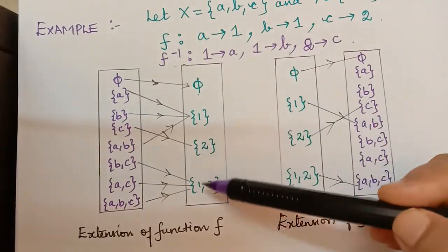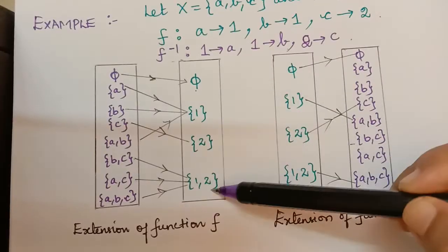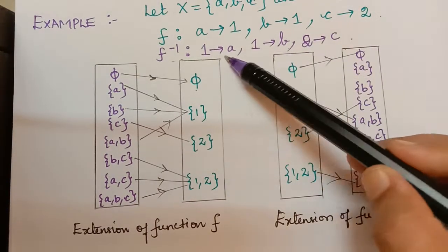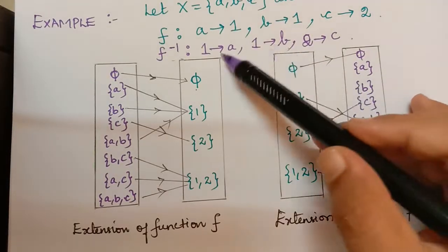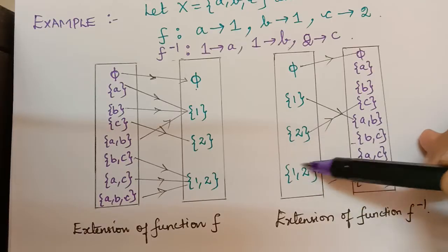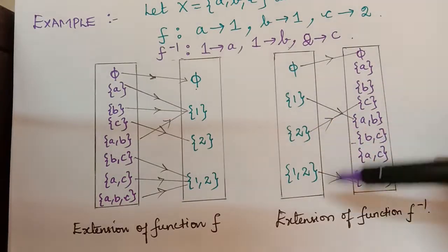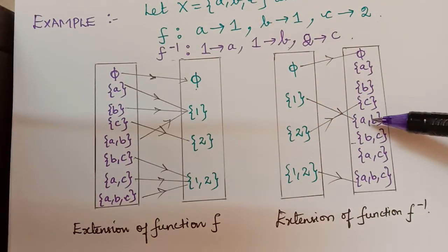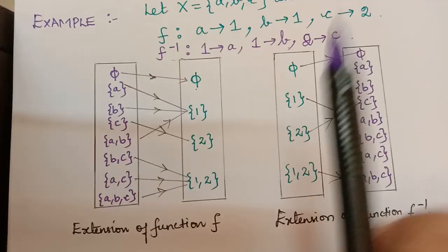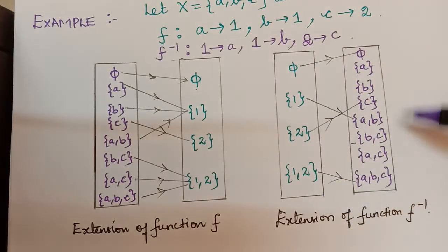This is how we extend a function. Now for the inverse function, we have the subsets phi, {1}, {2}, and {1, 2}. Phi is mapped to phi. We can see that 1 is mapped to A and 1 is mapped to B — writing them together, A and B, we map 1 to {A, B}. Then 2 is mapped to C, and {1, 2} is mapped to {A, B, C}. This is how we extend an inverse function.